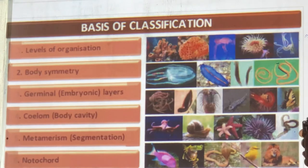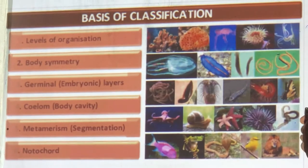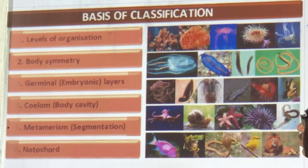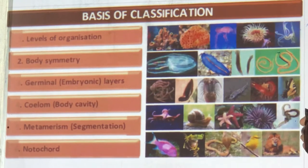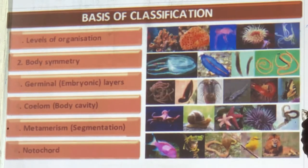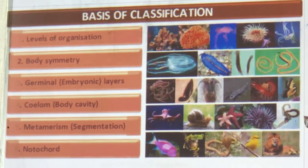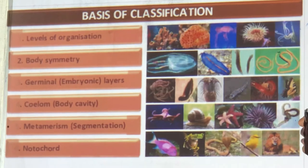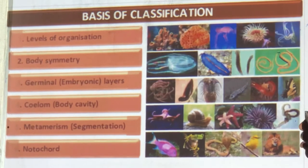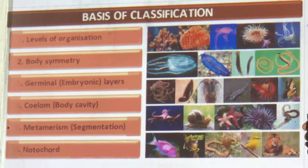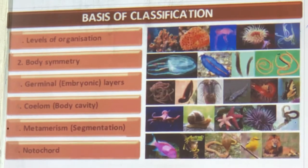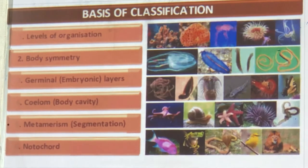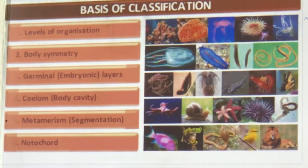How do we classify animals? We will study: levels of organization, body symmetry, how many germ layers — two or three — formed in the embryo, body cavity (coelom), whether they are segmented metamerically or not, and whether they have a notochord or not. We will study each in detail.